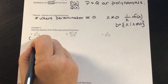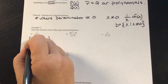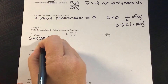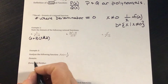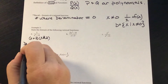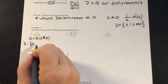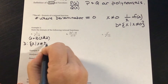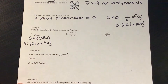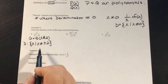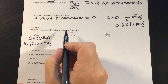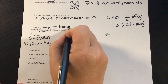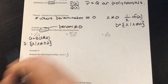Most of the time we're going to need to factor our denominators. Here we have the difference of squares, so I know I have X plus 2 and X minus 2. For my domain, I can have all values for X except X cannot equal plus and minus 2 — it can be anything else but positive and negative 2.